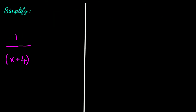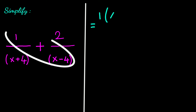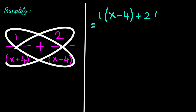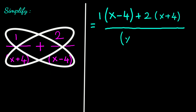Next example: 1 divided by (x plus 4) plus 2 divided by (x minus 4). Multiply 1 with (x minus 4), plus 2 with (x plus 4), all divided by (x plus 4) times (x minus 4).